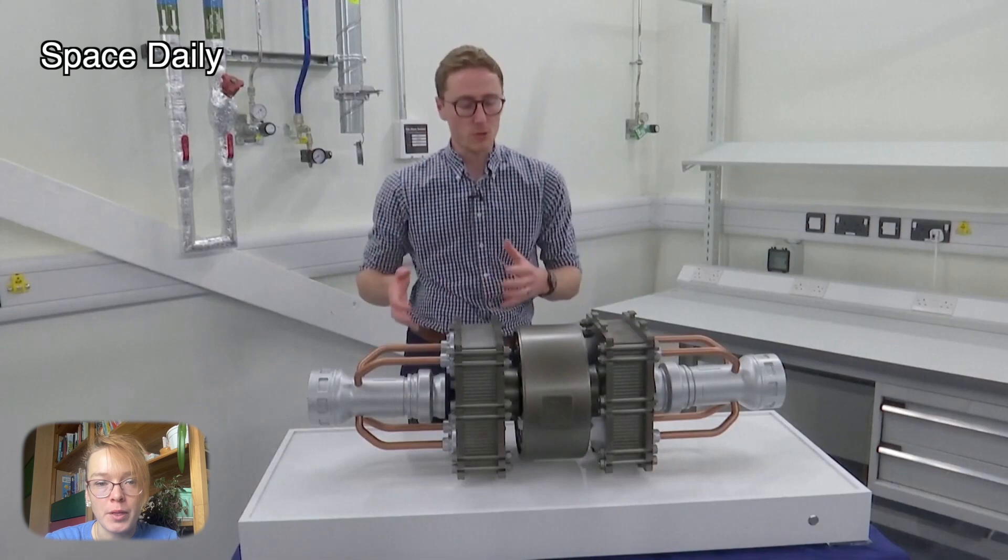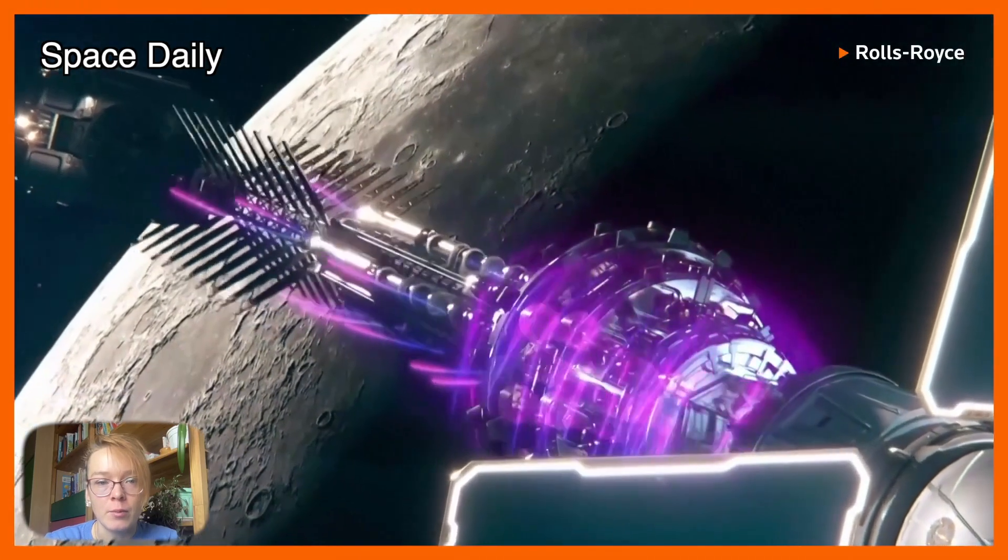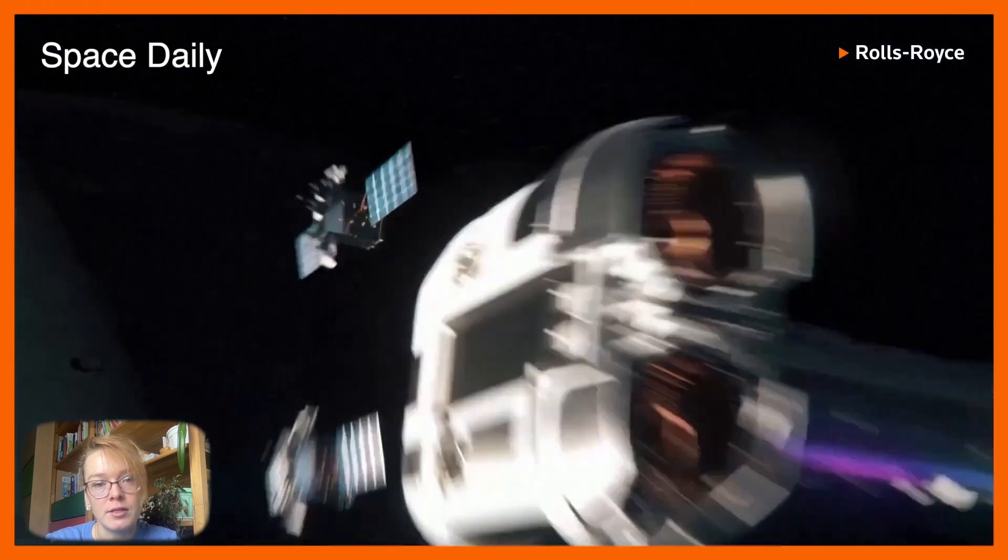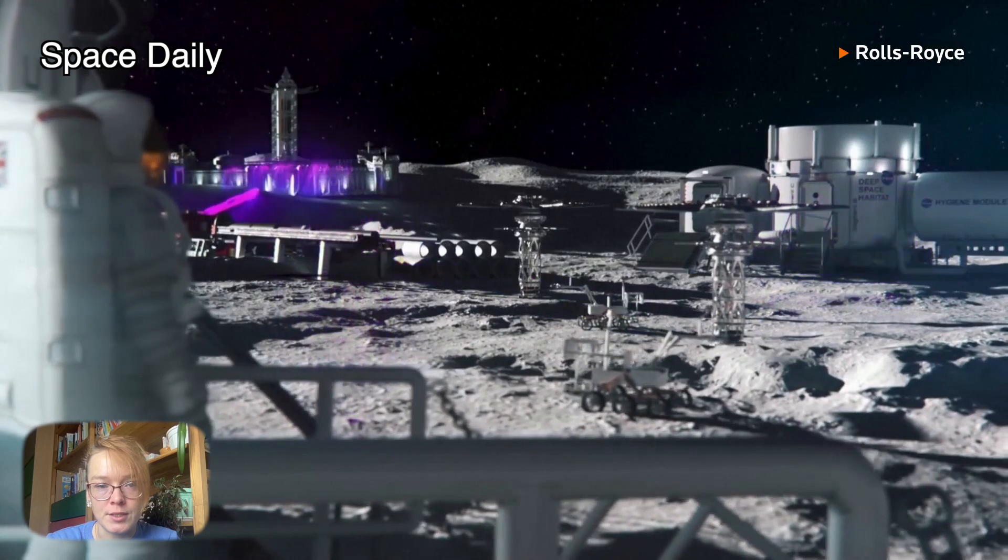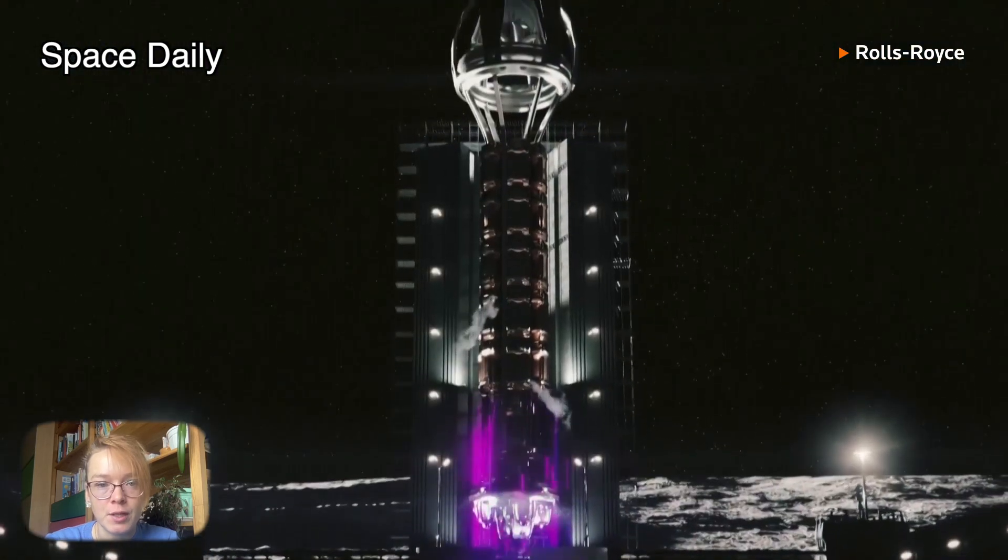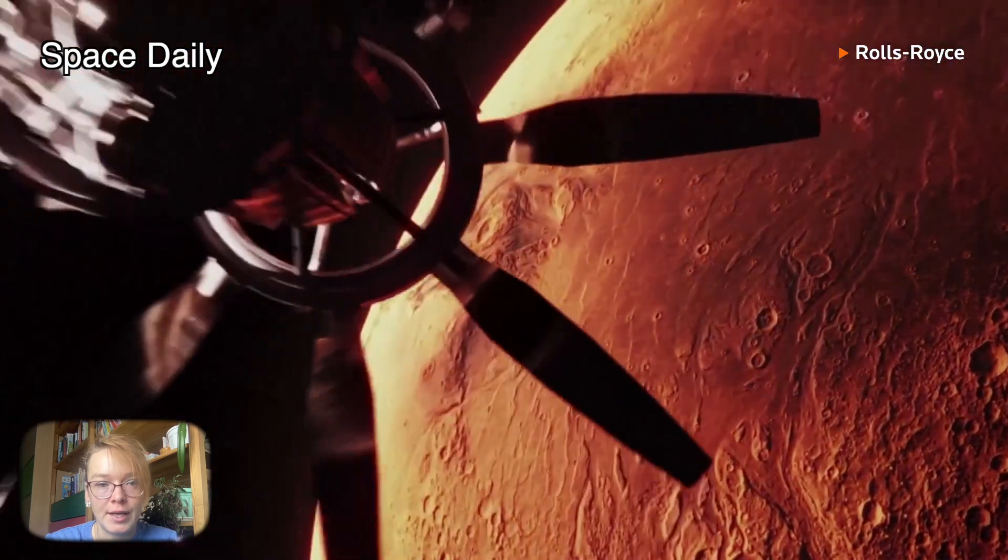The Rolls-Royce company began cooperating with the UK Space Agency in 2021. The company's engineers decided to create sophisticated technology which can be delivered to space agencies. Rolls-Royce developers have already made their first prototype of an interplanetary nuclear reactor.